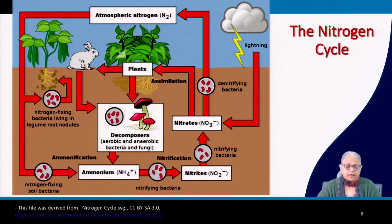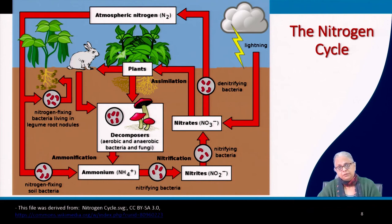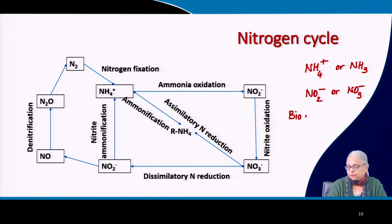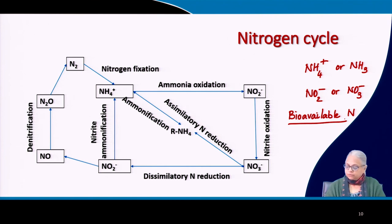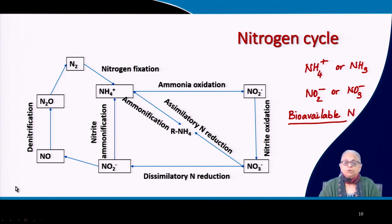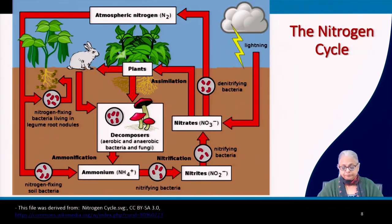Now for the nitrogen cycle. Nitrogen is an inert gas and not in bioavailable form even though it is abundant in the atmosphere. The bioavailable forms of nitrogen are ammonium/ammonia and nitrite/nitrate. N2 gas is not bioavailable, so despite the huge atmospheric reservoir of nitrogen, it does not benefit living organisms directly.